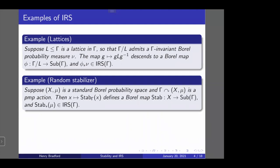This map sending a point to its stabilizer is a Borel map, so we can push the invariant measure mu on X forward to an invariant measure — namely an IRS — on the space of subgroups. This idea of taking a random stabilizer is very important in what follows. I'll refer to the IRS obtained by this construction as the IRS associated to the gamma-probability space X. Whenever I say the IRS associated to a space on which a group acts, this is what I mean: the random stabilizer IRS.